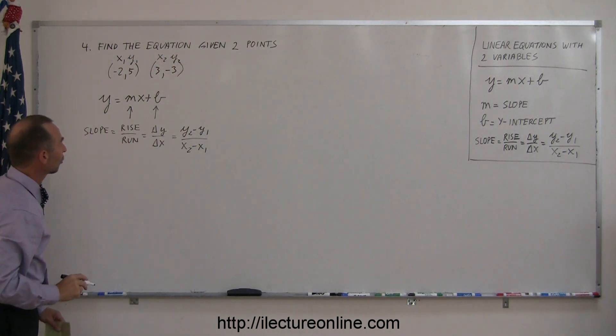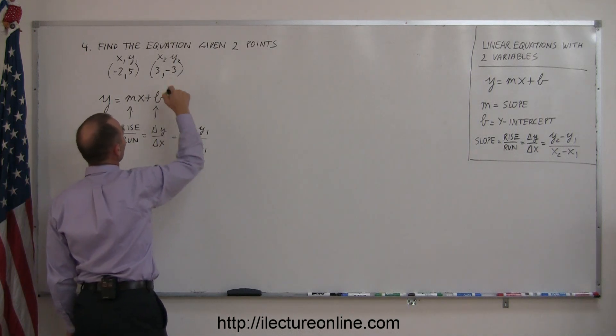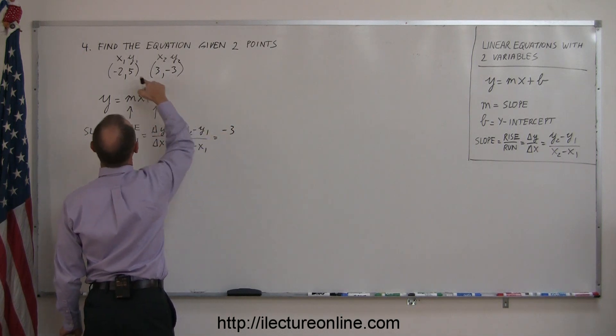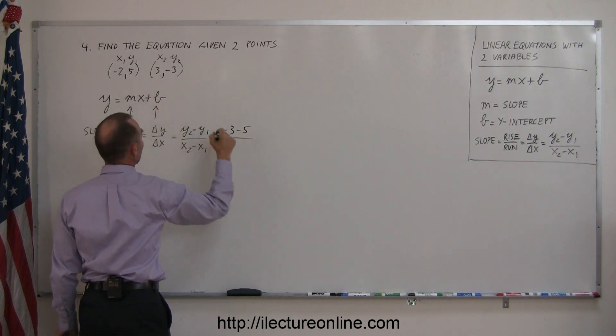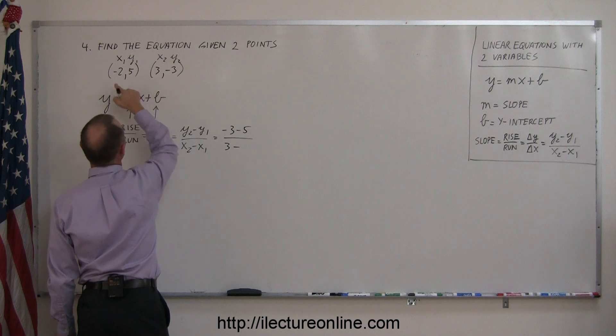Now we can plug those points in: y2 is negative 3, minus y1, which is 5, divided by x2, which is 3, minus x1, which is negative 2.